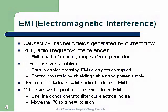To detect EMI, use a tuned-down AM radio — turn it to the high or low end and turn up the volume to pick up the interference. Other ways to protect against EMI: use line conditioners to filter out electrical noise, and move the PC to a new location. Often, just moving the PC from one wall to another can eliminate some of the problems you're experiencing.